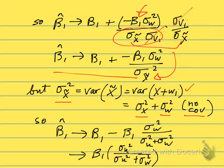So substituting that in, we get β̂₁ equals, or in the limit approaches β₁, the true parameter of the relationship, minus β₁ times σ²w divided by σ²u plus σ²w.